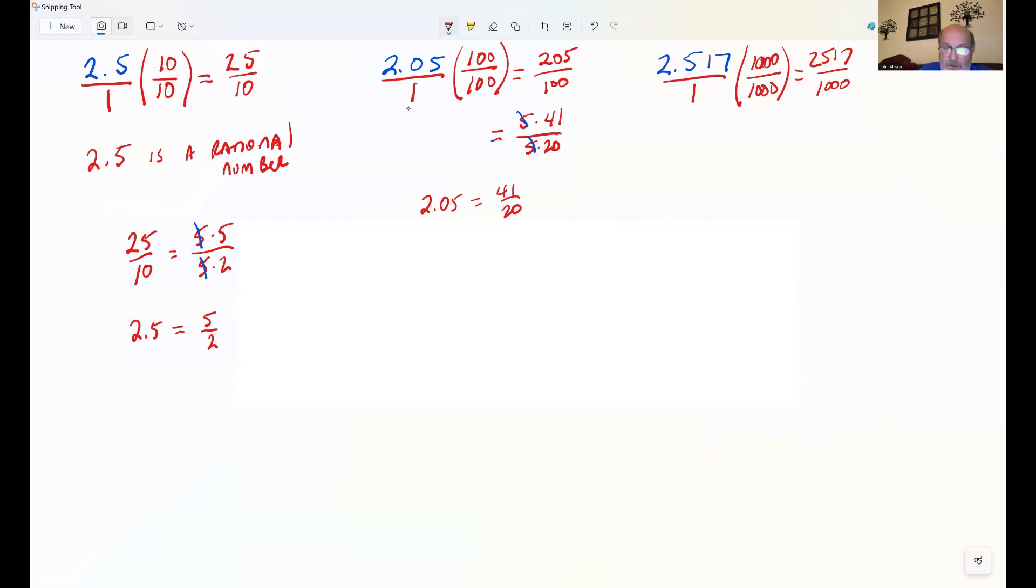And we're going to go ahead and go to the calculator and see if it will reduce it for us. 2,517 divided by 1,000 equals 2.517. So we show, right? And now we'll hit math. We'll hit enter twice. And that's not going to reduce as a fraction. That's as reduced as we can get it.